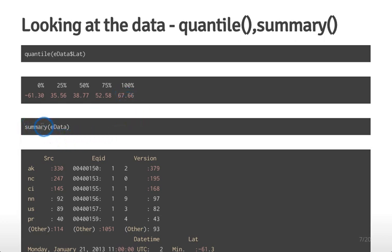You can also apply the summary() command to the entire data frame. When you do that, you get quantile information for quantitative variables, but also other information for qualitative variables. For example, for the source variable — which is not quantitative but has different characters corresponding to different detectors — summary shows that most earthquakes were detected with the AK detector, with 330 of them corresponding to that. It summarizes both quantitative and qualitative variables for a first-glance look.